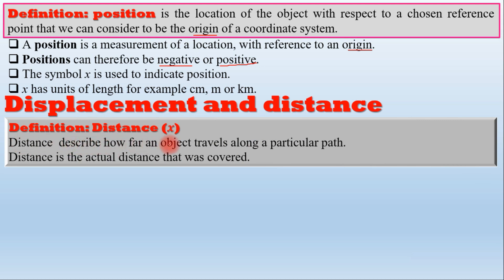Distance describes how an object travels along a particular path. The distance is the actual distance traveled.